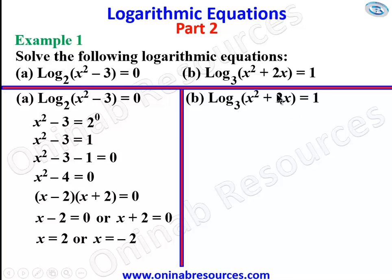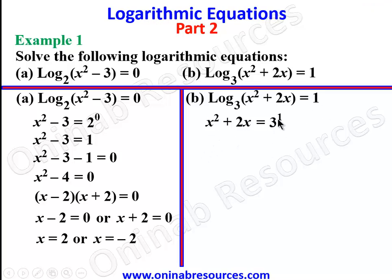We go to 1b. For 1b we have log of (x² + 2x) to base 3 equal to 1. Applying the relationship between indices and logarithm, we have x² + 2x = 3 to the power of 1, and 3 raised to the power 1 is 3. So we form the quadratic equation: x² + 2x − 3 = 0.